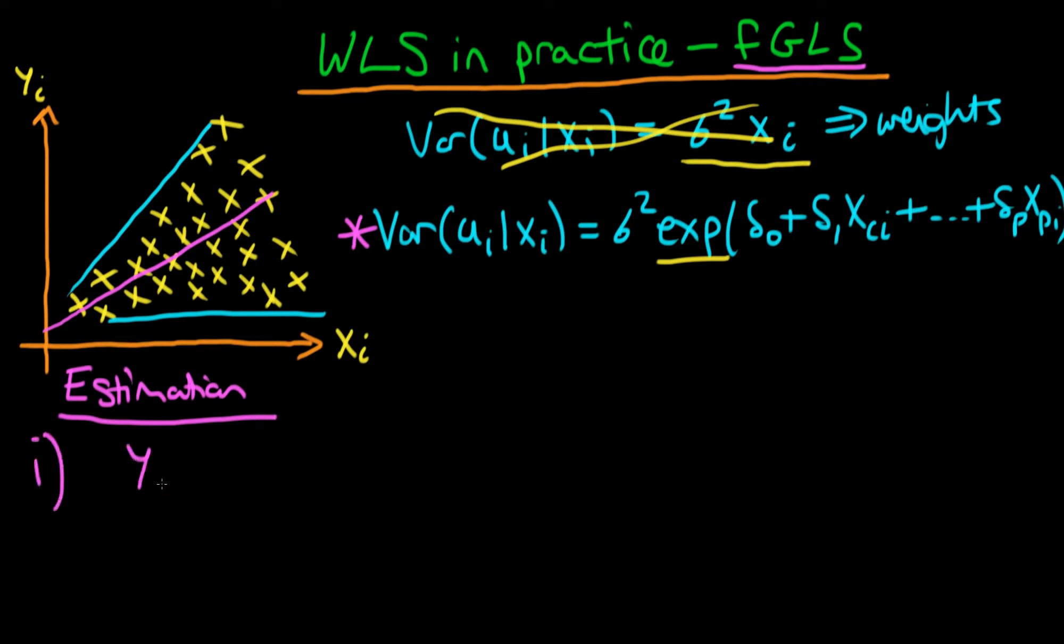We have on the right-hand side alpha plus beta 1 times x1i all the way through to beta p times xpi, and then we get the fitted values of our parameters on the right-hand side, and as well we get our fitted error which we call our residual. So that's the first step.